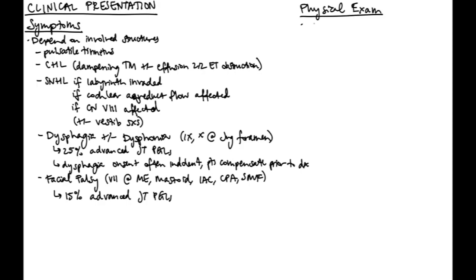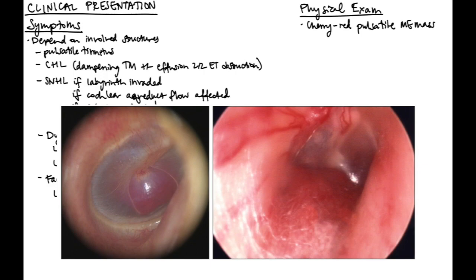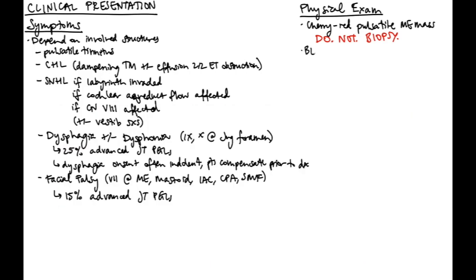On physical exam, if you see a cherry red pulsatile middle ear mass, it's a paraganglioma until proven otherwise. Do not biopsy that or it will absolutely ruin your day. Always perform bilateral otoscopy and look for contralateral disease because patients with SDHD mutations are the ones who are most likely to have multiple primaries and the most likely to have head and neck paragangliomas.